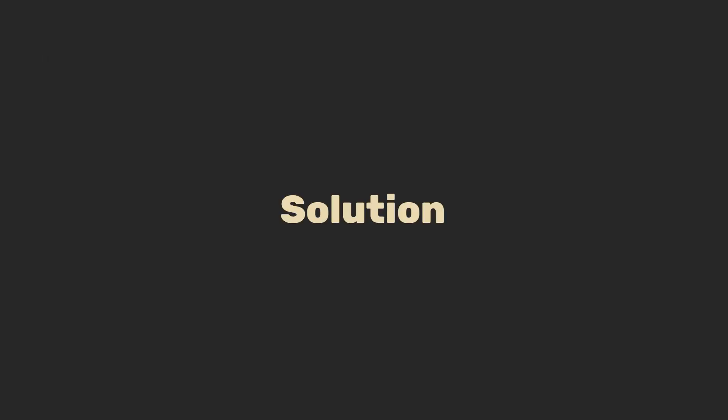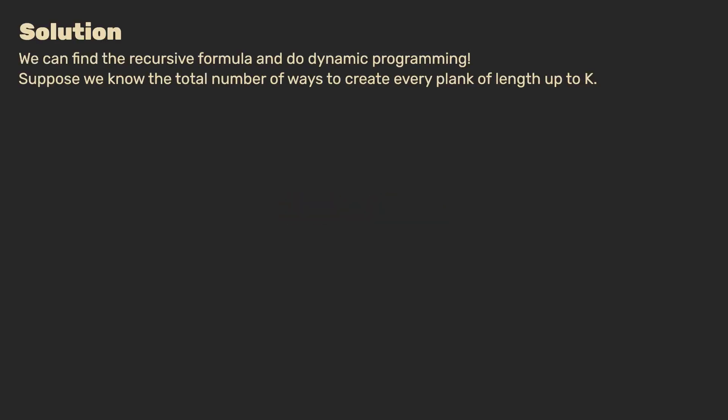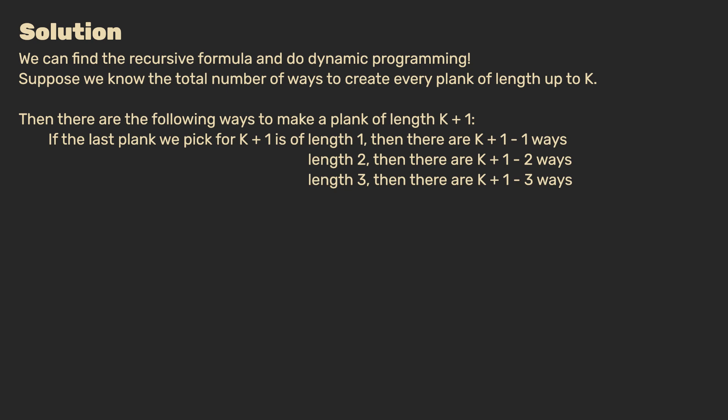Let's take a look at the solution. Given what we learned thus far, we can find the recursive formula and do dynamic programming. We start with the assumption that we know the total number of ways to create a plank of length up to k. Then there are the following ways to make a plank of length k plus 1. Here we need to consider three cases, one case for every length that we can pick as the last piece to finish our plank of length k plus 1.